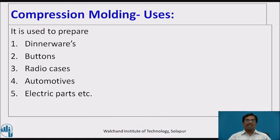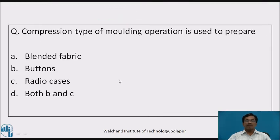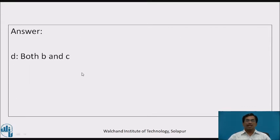Uses of compression molding: it is used to prepare dinnerwares, buttons, radio cases, automotives, electric parts, etc. Question: compression molding is used to prepare (a) blended fabric, (b) buttons, (c) radio cases, or (d) both b and c, that is buttons and radio cases. The answer is (d), both b and c — articles such as buttons and radio cases can be prepared by this compression type of molding, because fabric manufacturing is not possible with compression molding.